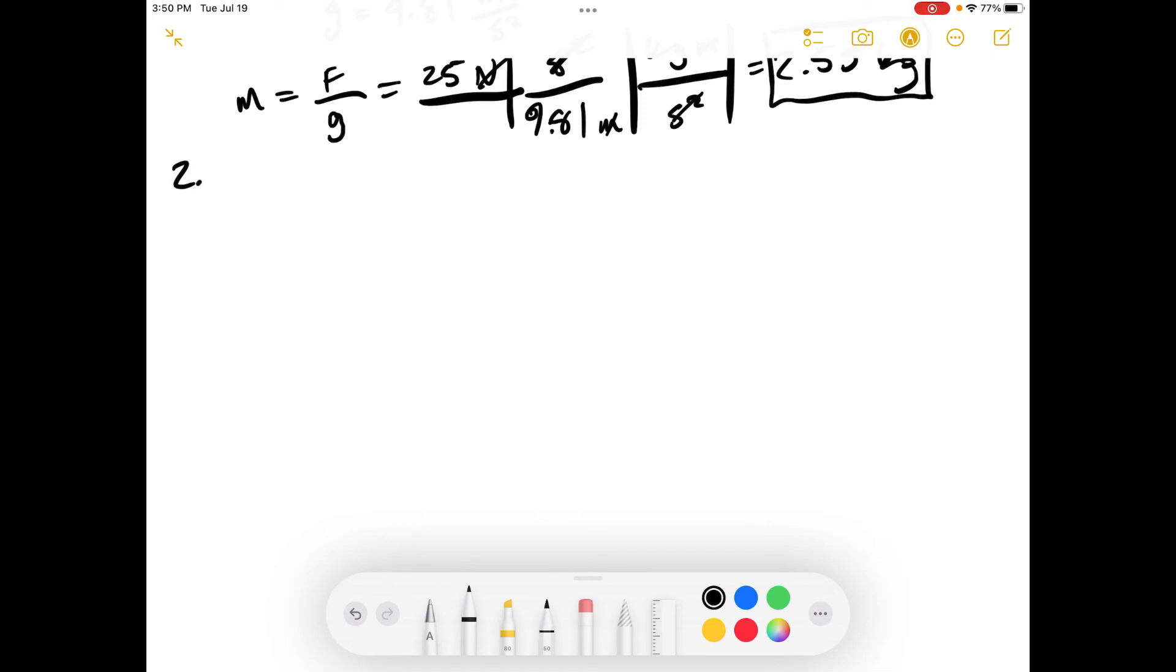All right, moving on to part C. This time we are starting off with the mass, and we're getting the weight. So we'll calculate the weight in dynes of a 10-ton object, not metric tons. Okay. So the mass equals 10 tons. The gravity is still the same, 9.81 meters per second squared.